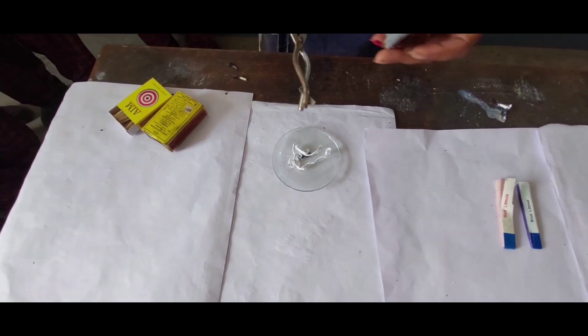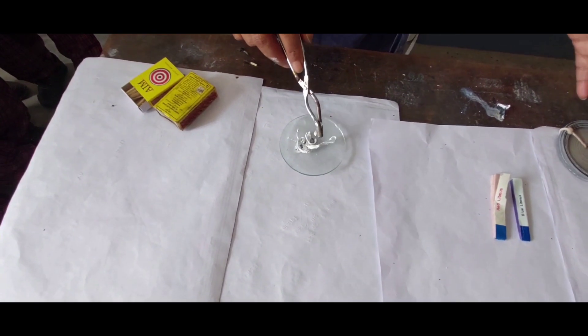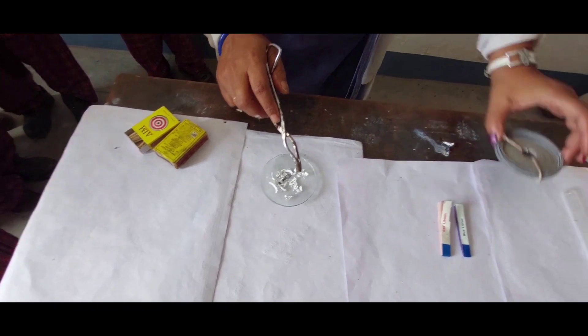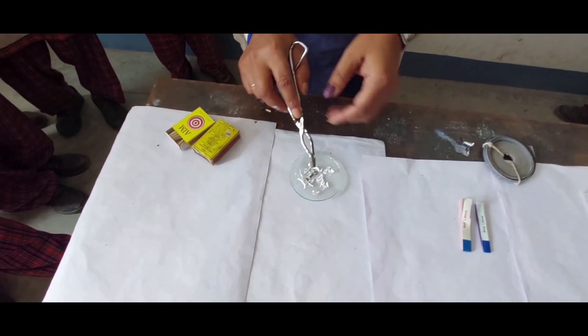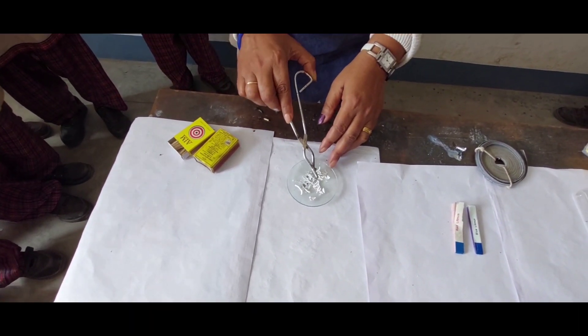Now see - earlier it was white and shiny, but now see, this is white powder. This was magnesium, and this is magnesium oxide.